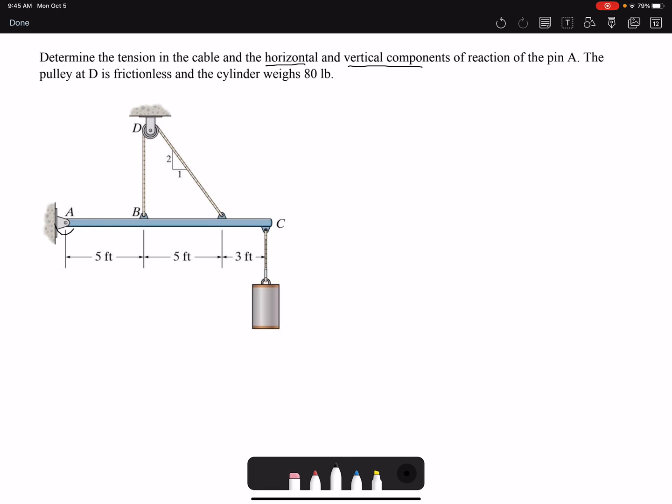The problem is already telling us that the support A is going to have two reaction forces. But if the problem hadn't told us, you should be able to identify that because the support at A is pinned, so it's going to have a reaction in x and reaction in y. The pulley at D is frictionless and the cylinder weighs 80 pounds.